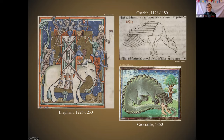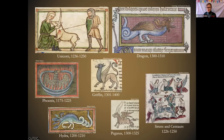Even some of these beasts did make it to Europe — including an elephant presented to Henry the Third of England in 1255 — but still, most of these animals were going to be utterly outside the experience of anyone who might be writing, illustrating, or even the wealthy patrons reading one of these bestiaries. And finally, you have your animals that we now know to be fantasy, and this is the really fun stuff.